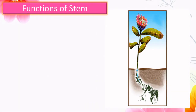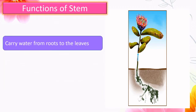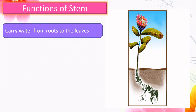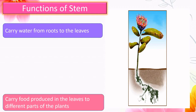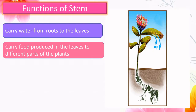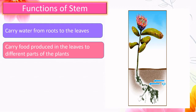Functions of stem: the stem helps to carry water from the roots to the leaves, and it also helps to carry the food produced in the leaves to the different parts of the plant.